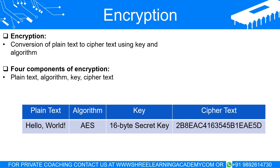Think of encryption as a sophisticated form of writing secret notes. Encryption is a method of converting readable data, known as plain text, into a code that can only be deciphered by those who possess a special key. The purpose of encryption is to secure sensitive information from being accessed by unauthorized parties. The scrambled data that comes out after encryption is called cipher text.